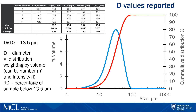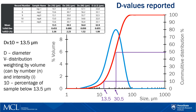Here you can see on the plot where we show volume distribution and also cumulative distribution. We can find the D10, D50, and D90 values. These are the commonly reported values for laser diffraction.